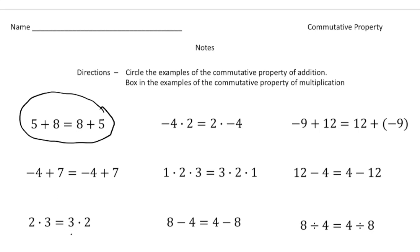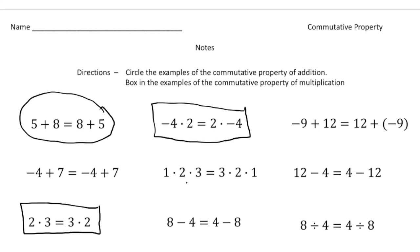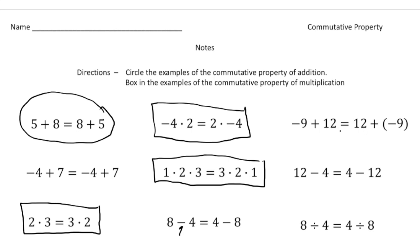2 times 3 equals 3 times 2 — the order switched around and it's only multiplication, so this is the commutative property of multiplication. Let's box that. Negative 4 times 2 equals 2 times negative 4 — the order switched, so that's also the commutative property of multiplication. Next: 1 times 2 times 3 equals 3 times 2 times 1 — the numbers moved around, so this is the commutative property of multiplication. Then: 8 minus 4 equals 4 minus 8 — the operation is subtraction, so that's neither the commutative property of addition nor multiplication. Finally: negative 9 plus 12 equals 12 plus negative 9 — we're adding and the numbers switched, so this is the commutative property of addition.